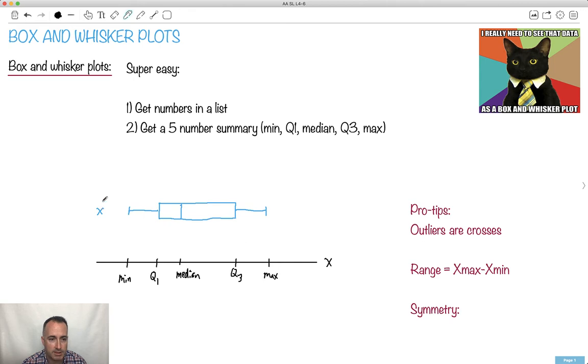What's this little X thing right here? That's an outlier. We draw them as Xs. We call them outliers. So these are your pro tips. First one: outliers are crosses.